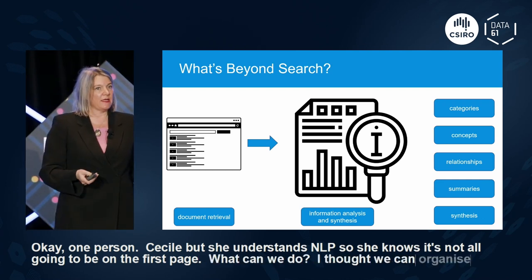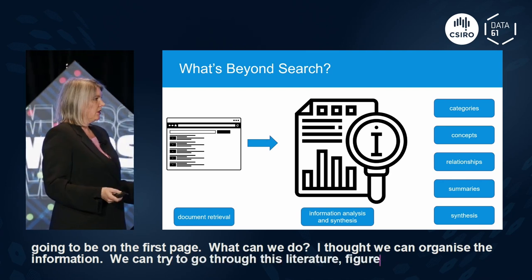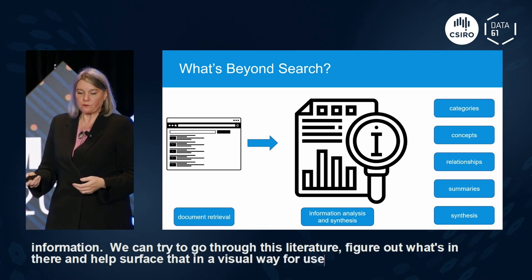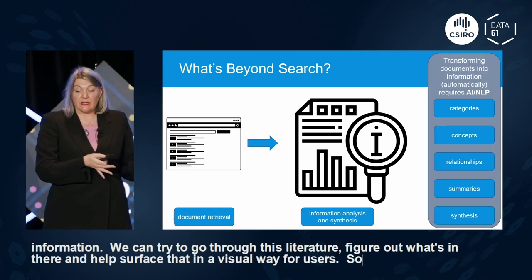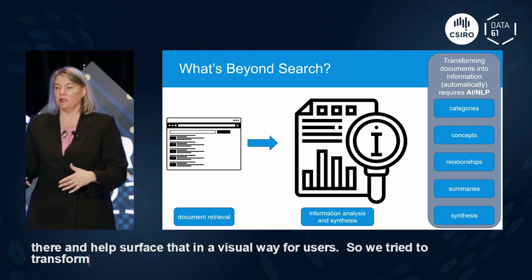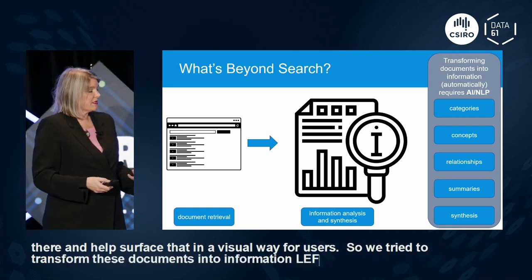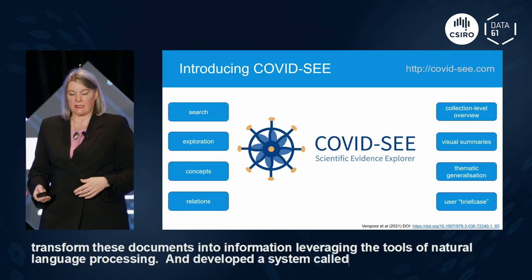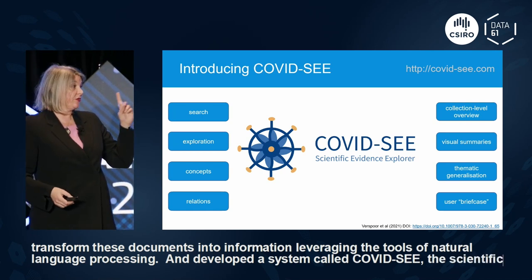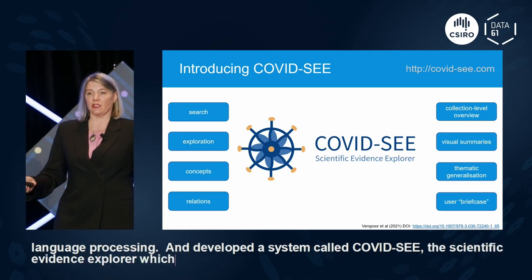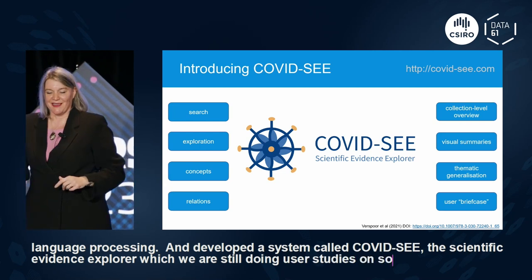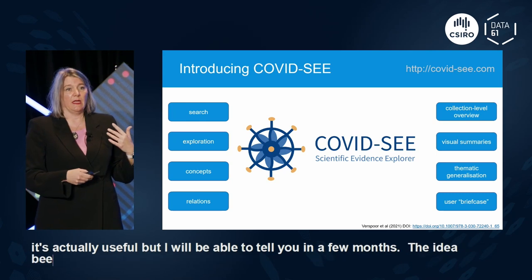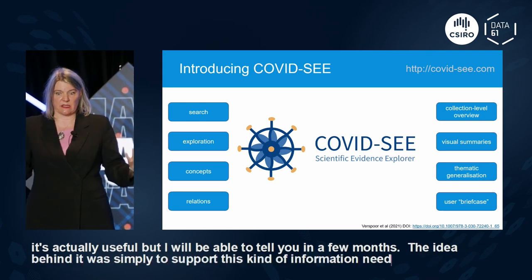So what can we do that's not search? We can organize the information — go through the literature, figure out what's in there, and surface it visually for users. We transform these documents into structured information leveraging natural language processing tools, and developed a system called COVID-SEE, the Scientific Evidence Explorer. We're still doing user studies on it, so I don't know yet if it's actually useful, but I'll be able to tell you in a few months.